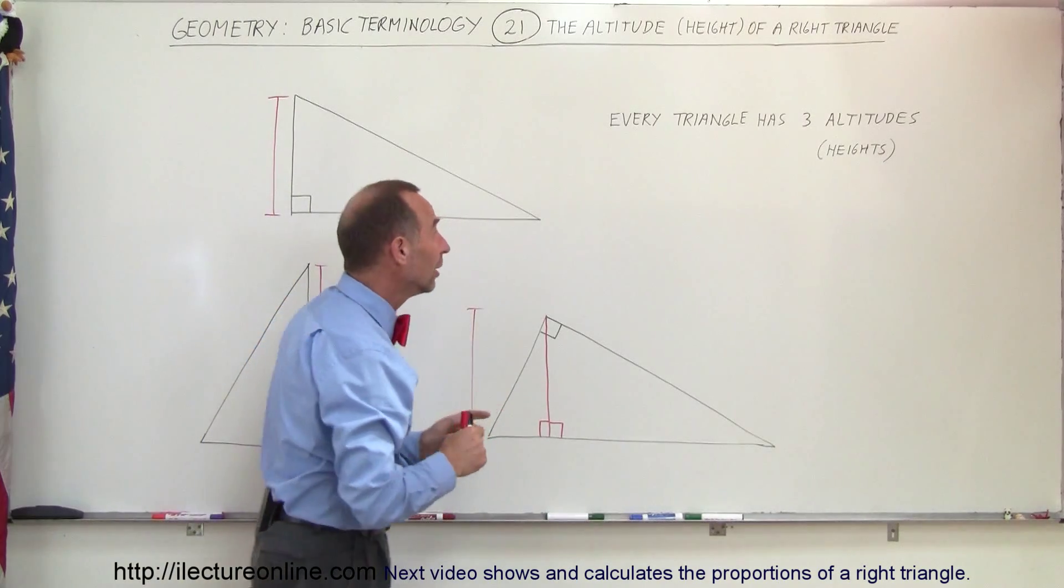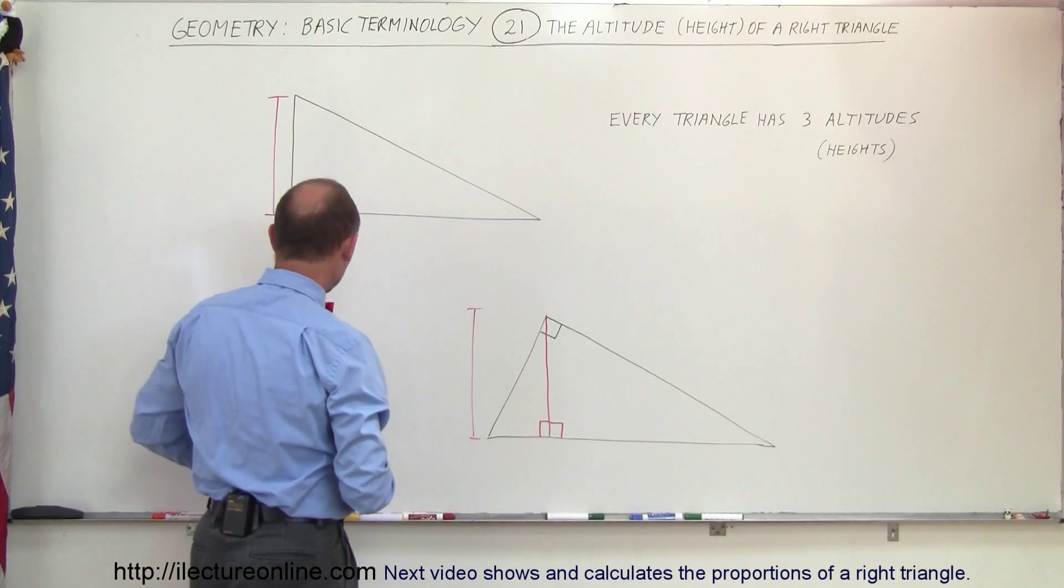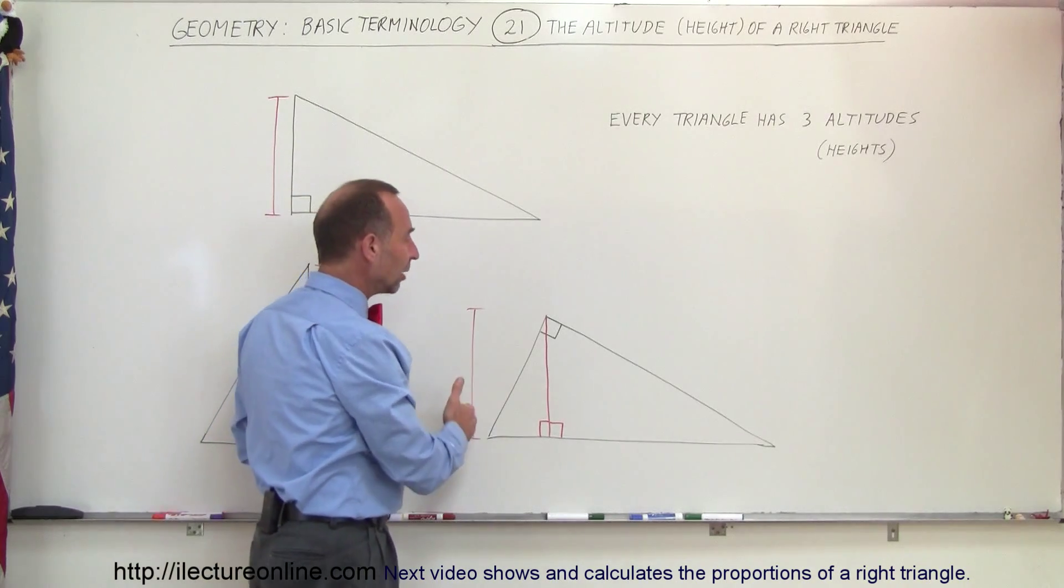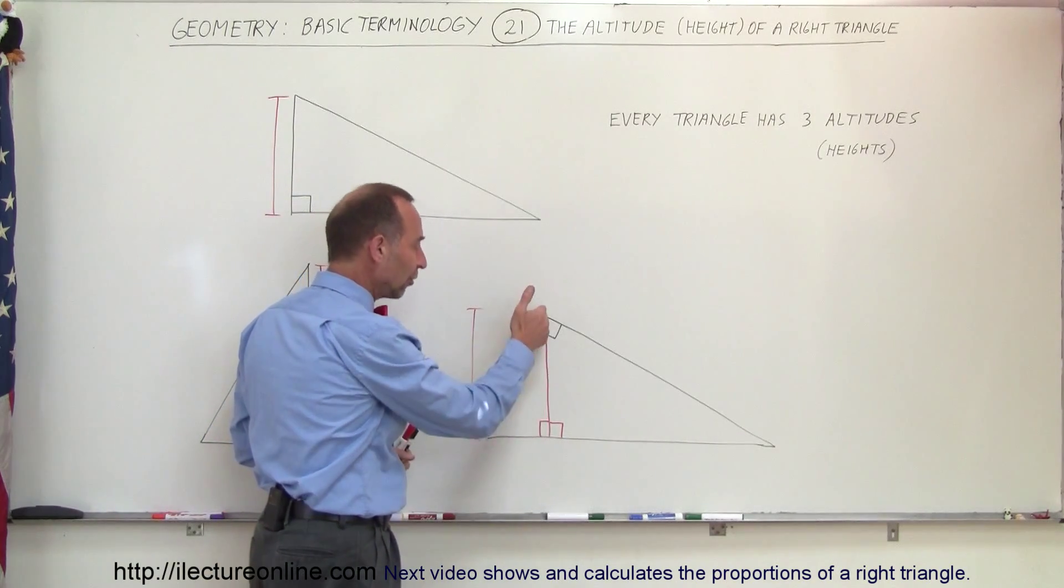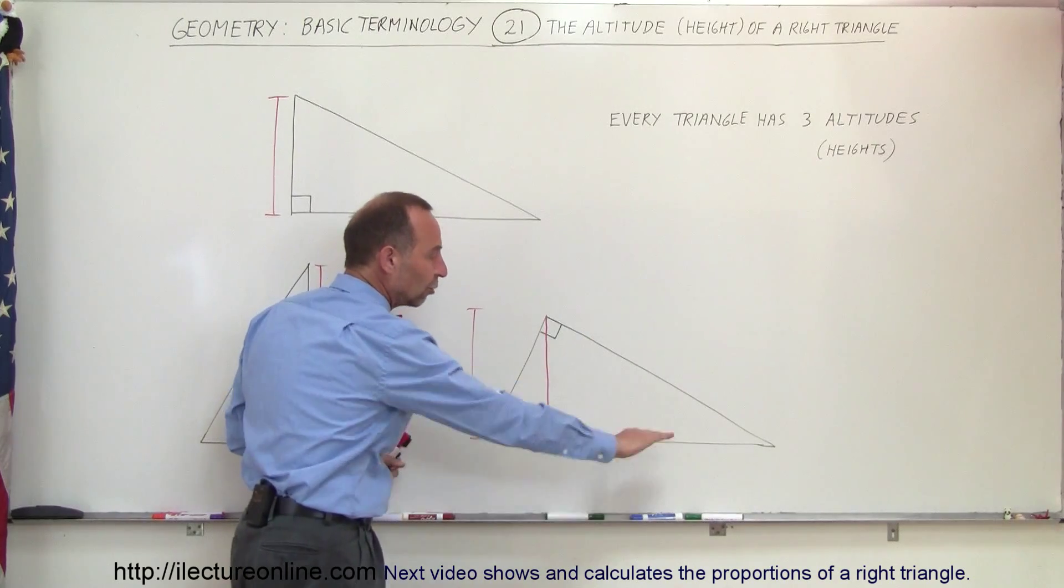And when it comes to a right triangle, two of the heights or two of the altitudes are the length of the two sides, and the third altitude is the distance from the vertex to the hypotenuse or the base when the hypotenuse is horizontal.